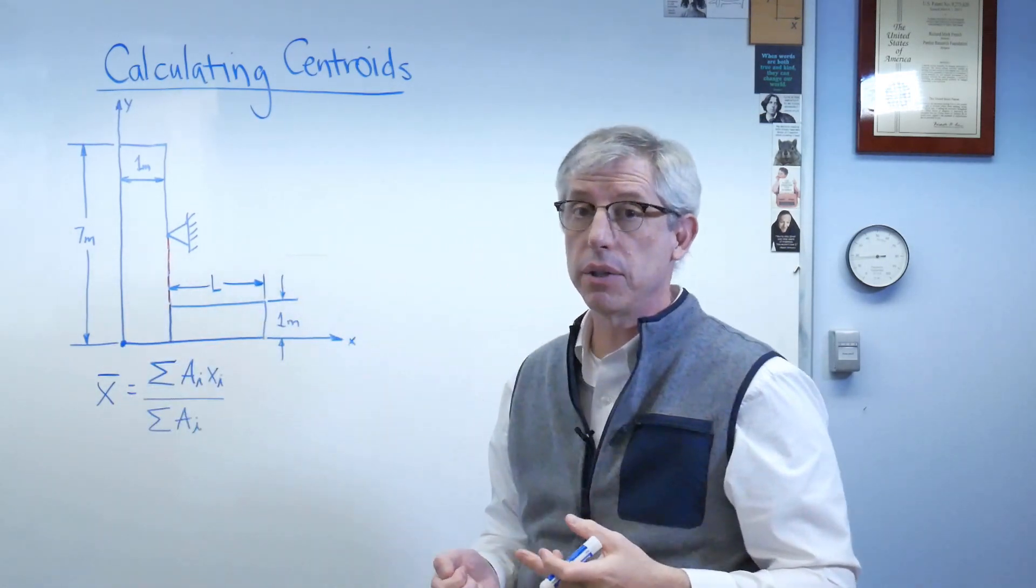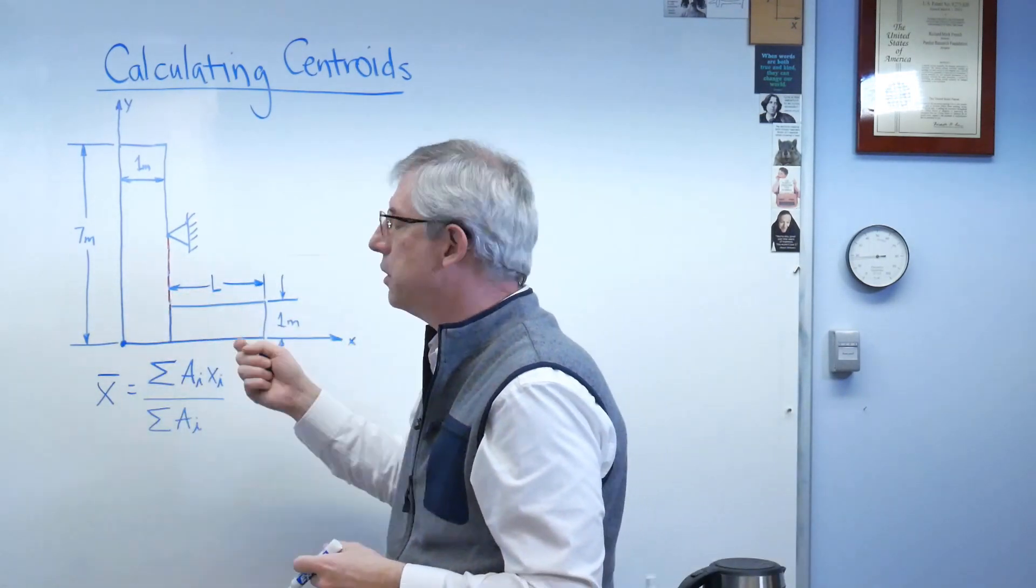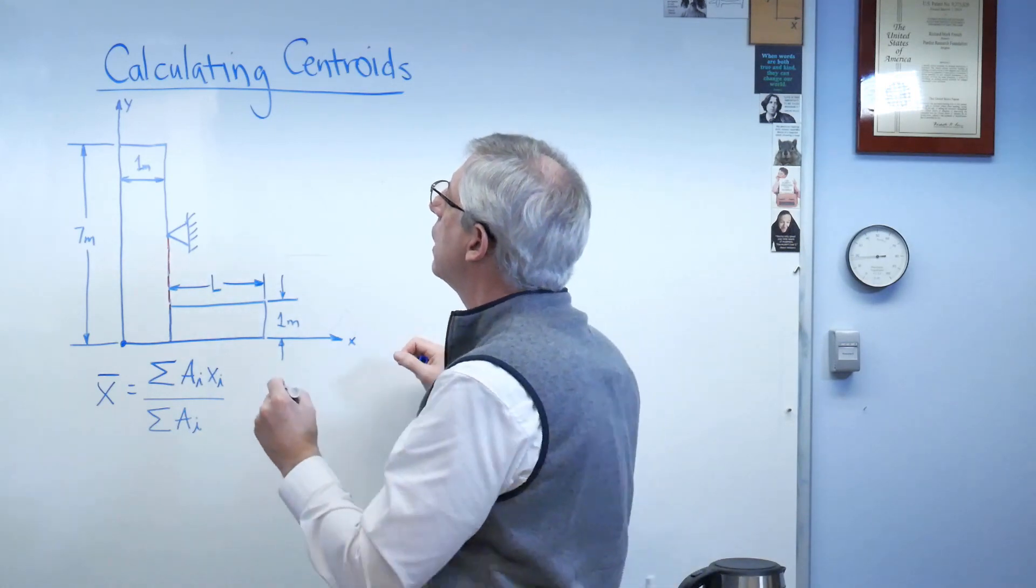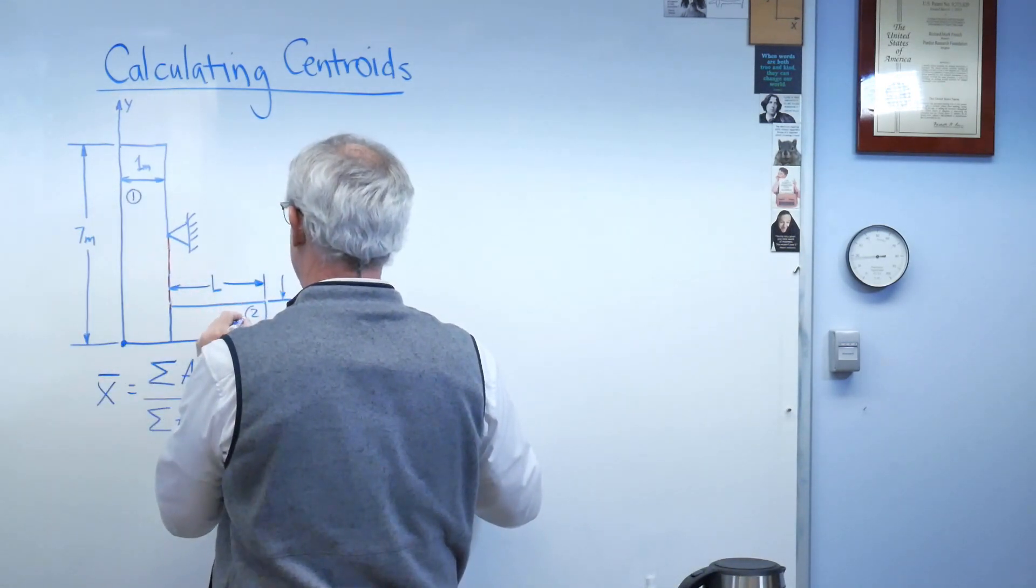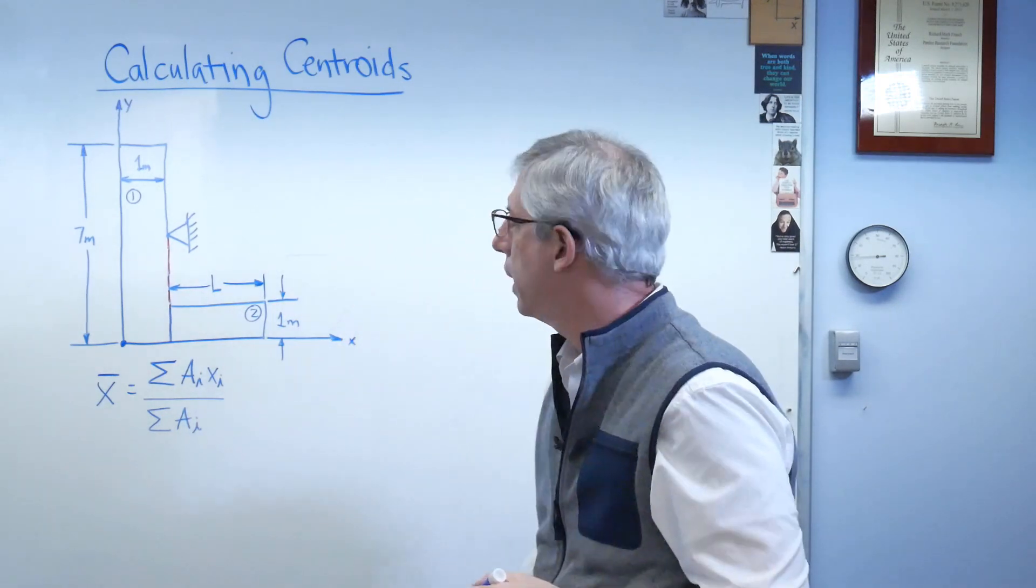So I've divided my composite shape into two smaller shapes, sub-shapes, or whatever you want to call those, and I'll number this as number one, and I'll number this one as number two. It doesn't matter how you number them.